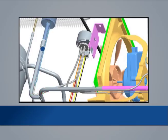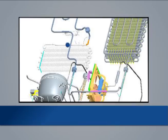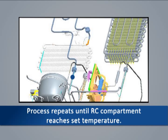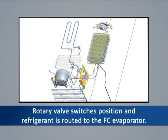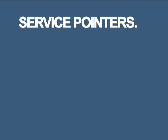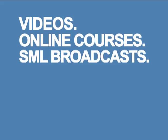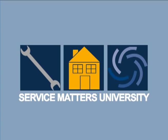When the refrigerant sprays out of the cap tube into the larger evaporator tubing, the high temperature, high pressure liquid transforms to a low temperature, low pressure liquid. As this low temperature, low pressure liquid passes through the evaporator, it absorbs heat and changes state to a low temperature, low pressure vapor. This vapor continues through the suction line back to the compressor, where it is again compressed and the process continues. When the RC compartment reaches the set temperature, the compressor shuts off. When the FC compartment requires cooling, the rotary valve switches position and the refrigerant is routed to the FC cap tube and FC evaporator until the FC set temperature is reached.